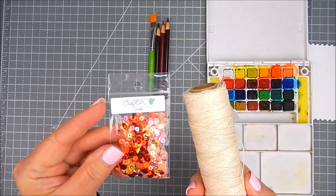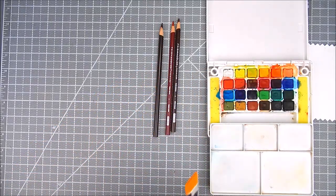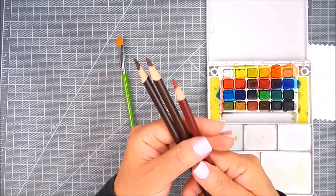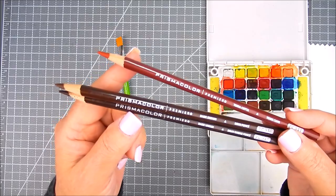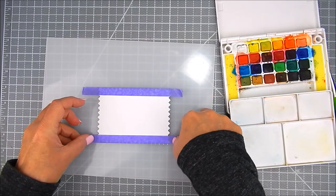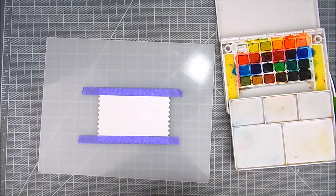I also have sequins and twine and a flat watercolor brush. I'm using Prismacolor colored pencils. Now I start with watercolor paper on the smooth side.